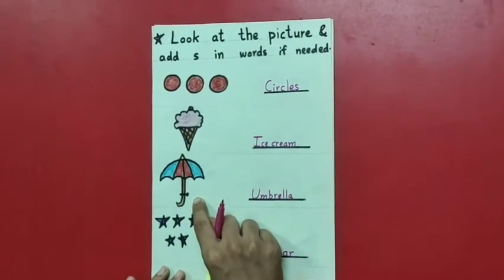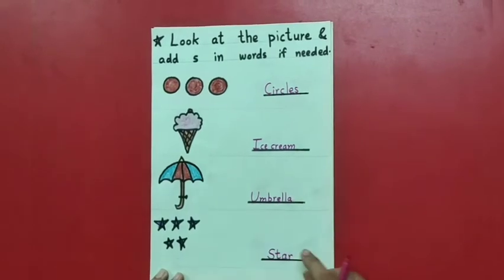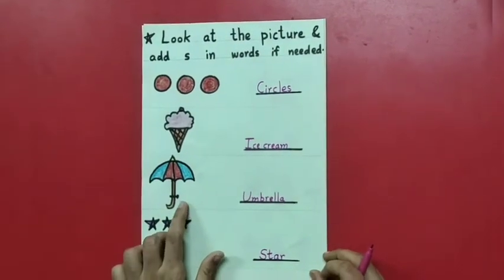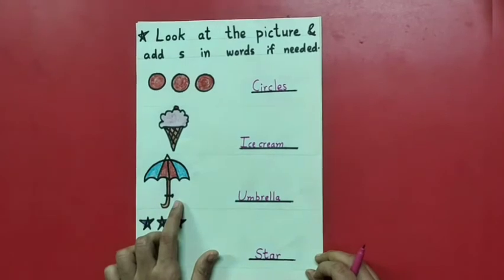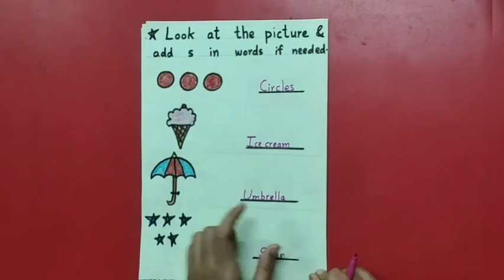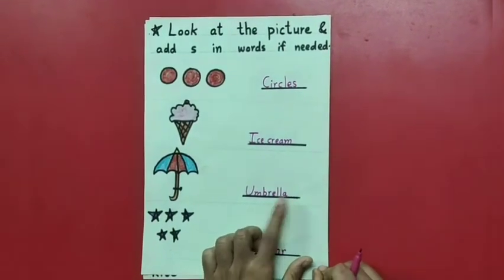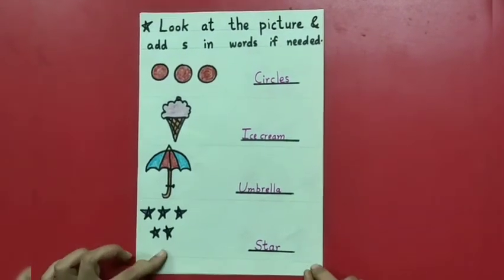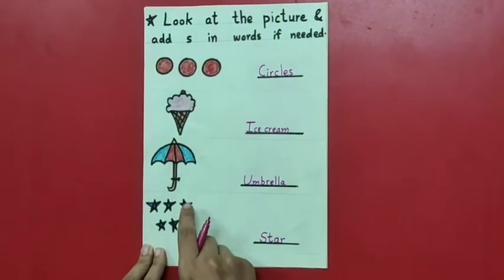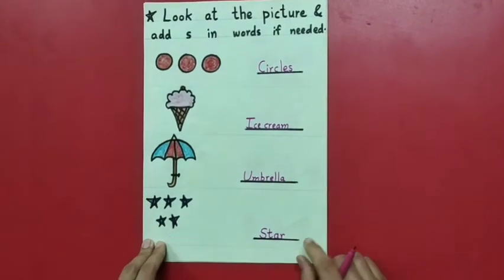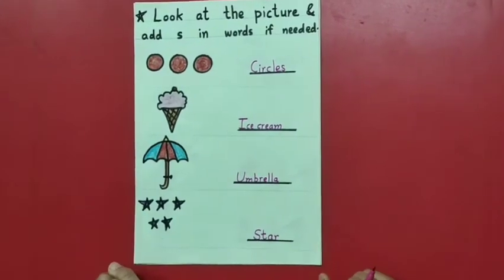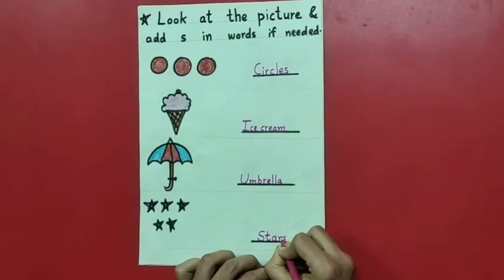Moving to next — an umbrella. When we use an umbrella in the rainy season, in the monsoon. How many umbrellas are here? Only one. So are we going to add 'S' in this spelling? No. Moving to next — ma'am has drawn stars. You can count: 1, 2, 3, 4, 5 stars. How many? Five. So we will add 'S' in the spelling because here more than one are present.